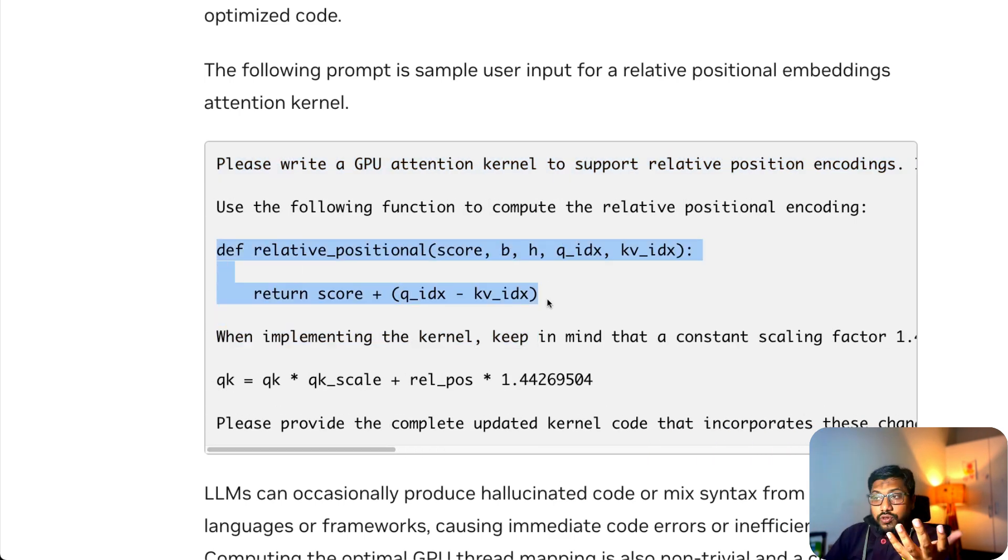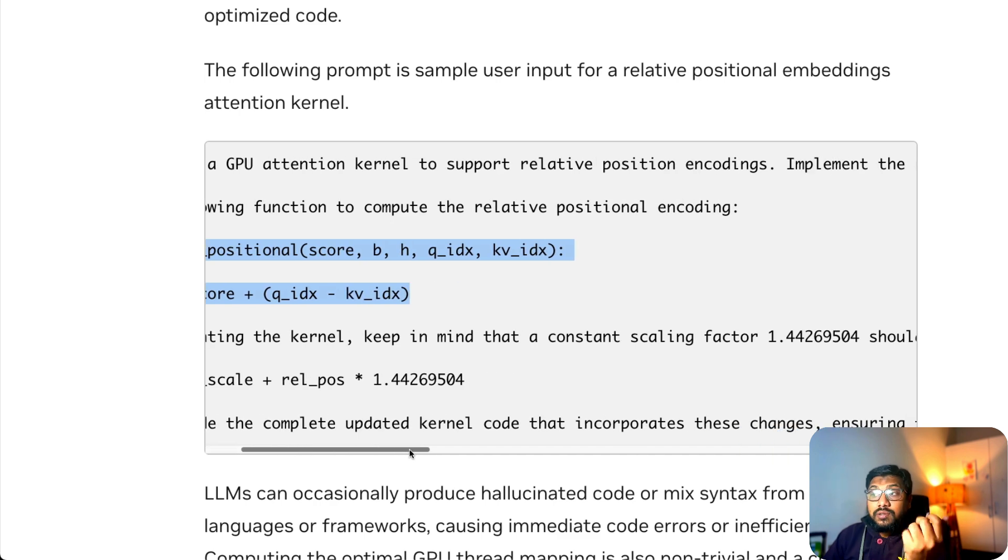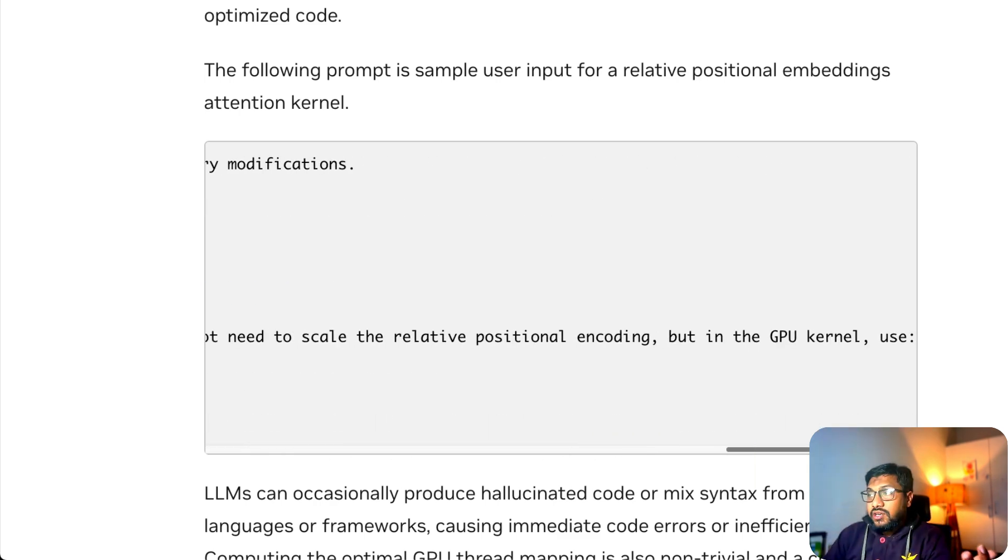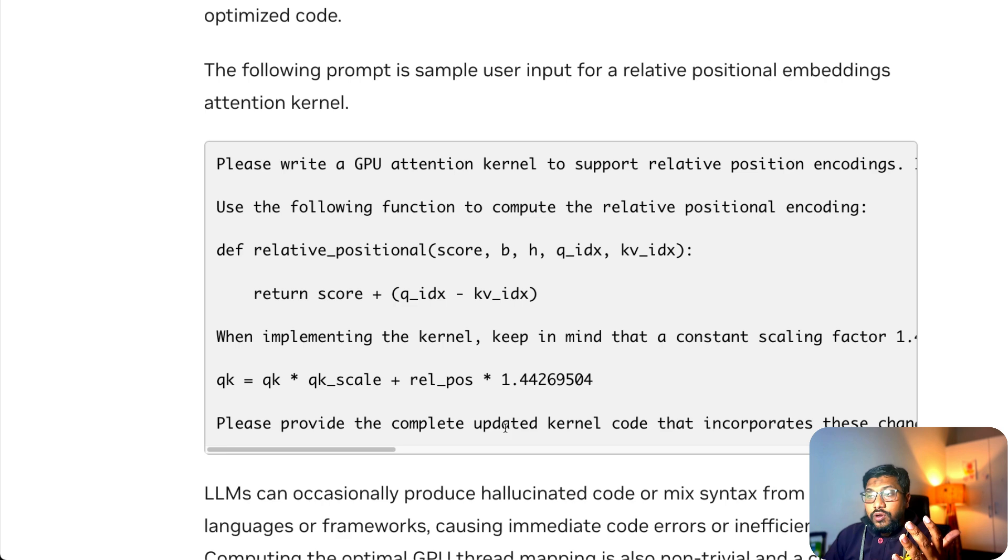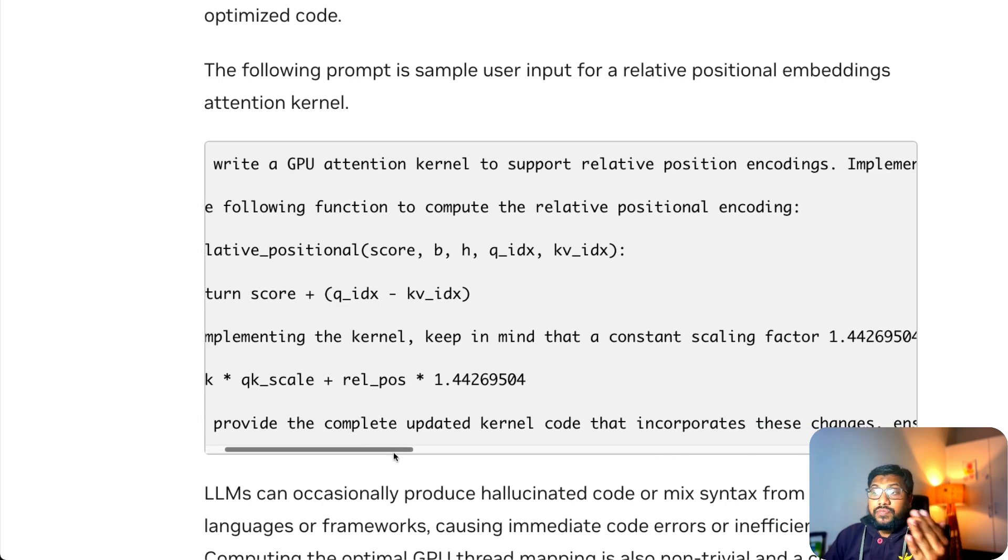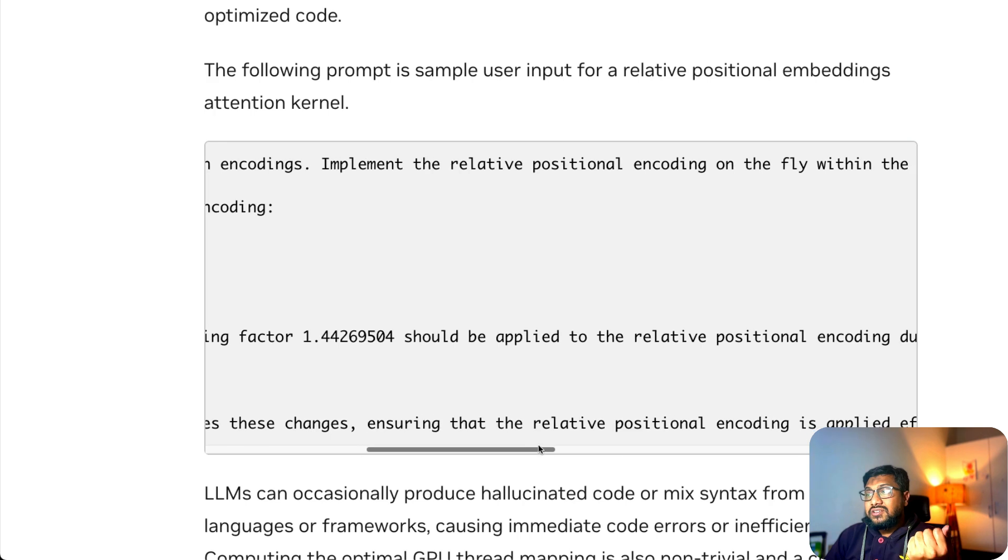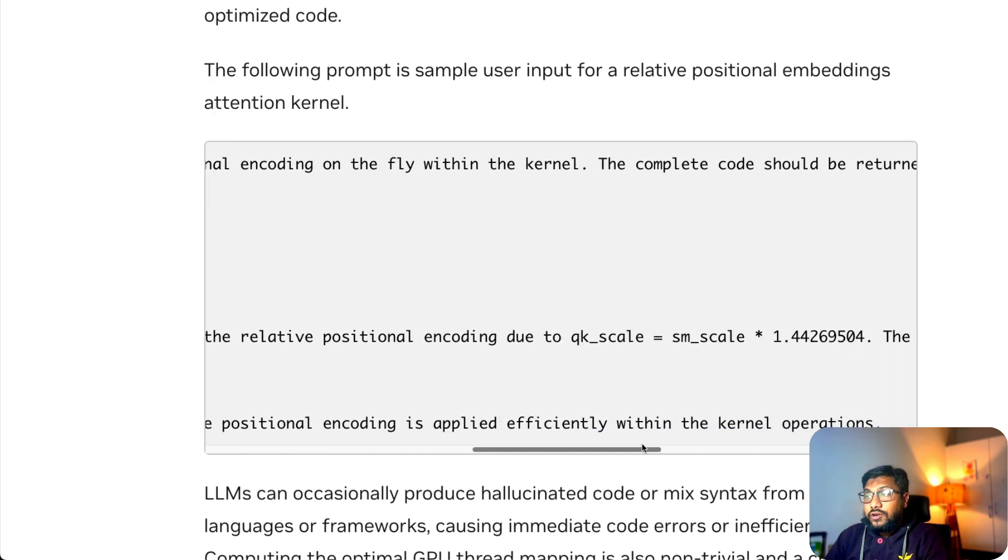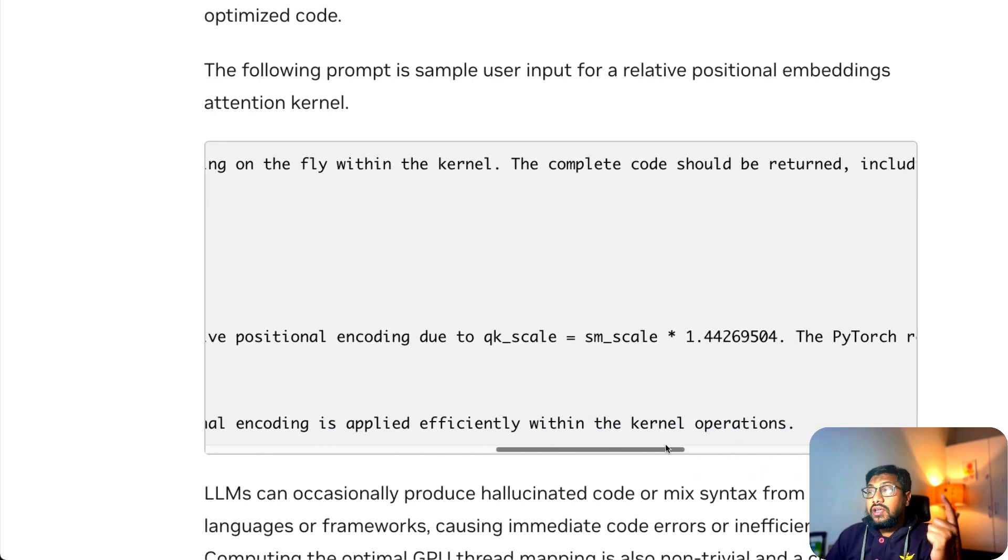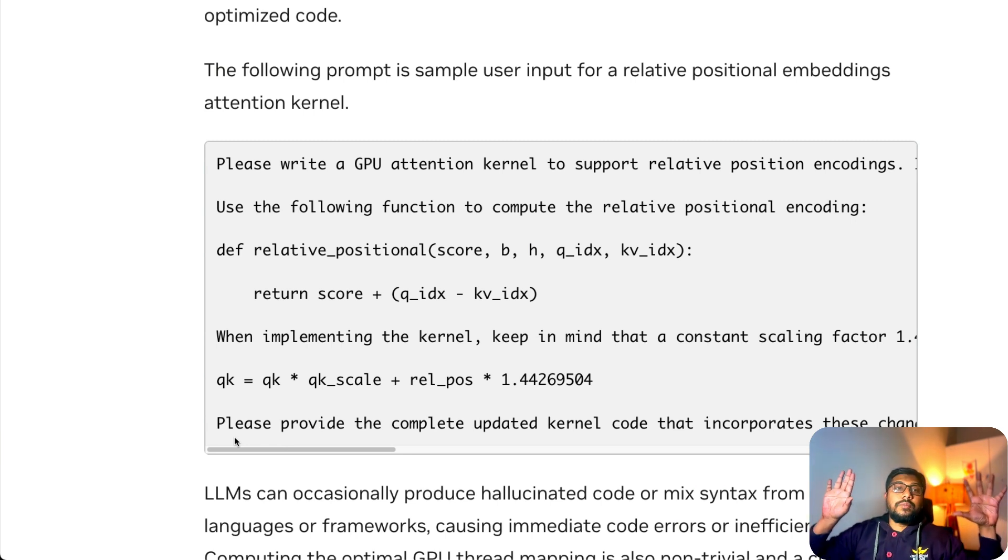Then it gives some details around how they can do it. 'When implementing the kernel, please keep in mind the constant scaling factor,' some other information, and there is a formula. 'Please provide the complete updated kernel code that incorporates these changes, ensuring that the relative positional encoding is applied efficiently within the kernel operation.' This is a very simple prompt that they have given, something like you and I would do.